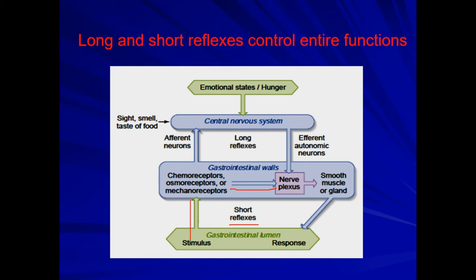Stimulation of these plexuses affects two structures: either the smooth muscle to modulate motile activity, or the gland to stimulate secretory activity. The response is then observed. This loop is called the short reflex — the stimulus is generated from the GIT lumen and the built-in plexuses alone are responsible to elicit the desired response.